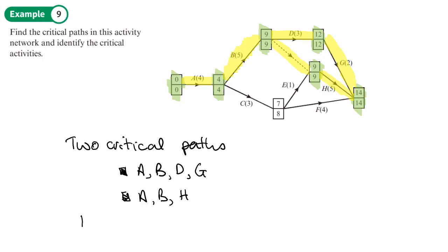Then if we're going to write down the critical activities, well it's all of the ones that we had written before. So A, B, D, G, and H.